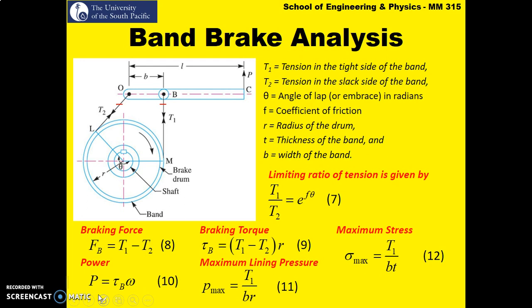Power is your braking torque times angular velocity, where omega equals 2-pi-n over 60. The maximum lining pressure is given by T1 divided by BR, and the maximum stress in the belt is given by T1 divided by BT, where BT is the cross-sectional area of the belt — width times thickness. T1 appears in both cases because it is the maximum tension the belt experiences, as the tight side has higher tension than the slack side.